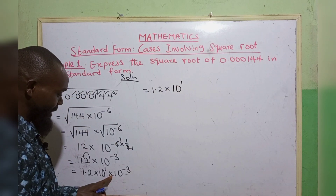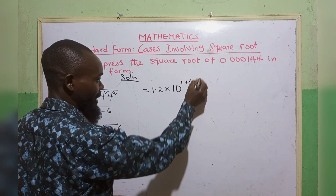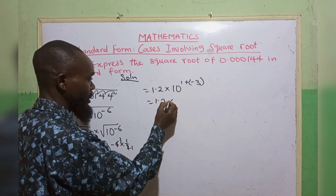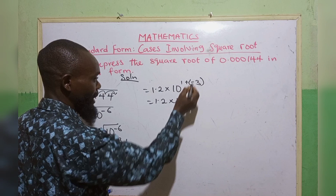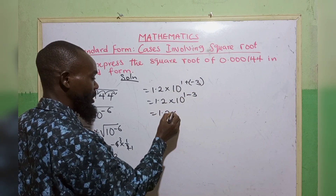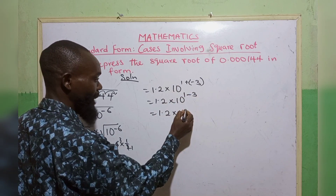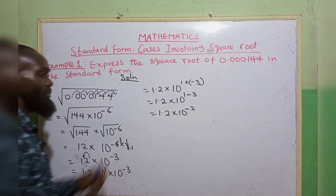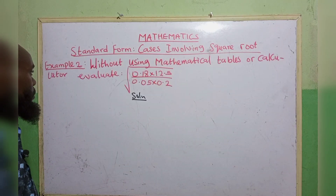Then combining the powers: 1 plus minus 3 gives minus 2. So the final answer is 1.2 times 10 raised to the power of minus 2.